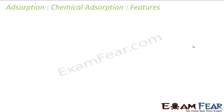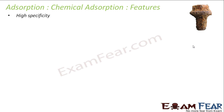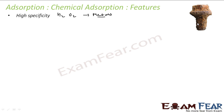Now let's look at features of chemical adsorption. The first feature is that it is highly specific — it occurs only when there is a possibility of a chemical reaction between the adsorbate and adsorbent. For example, gold will not adsorb oxygen but iron can, because iron can react with oxygen. Hydrogen is adsorbed on metals because metal hydrides can be formed.